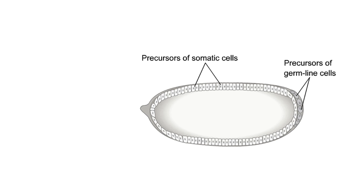Membranes form around the nuclei, producing a cellular blastoderm. Subsequent development of body structures involves a well-ordered sequence of developmentally programmed events under strict genetic control.